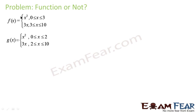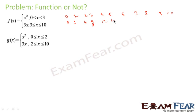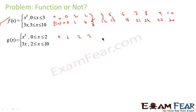Let's take one more example where f(x) and g(x) are piecewise-defined and we need to check whether they are functions. For f(x): from 0 to 3 it is x², giving values 0, 1, 4, 9; from 3 to 10 it is 3x, giving 9, 12, 15, 18, 21, 24, 27, 30. For every input there is only one output — for 3 we have only 9, for 4 only 12 — so f(x) is a function.